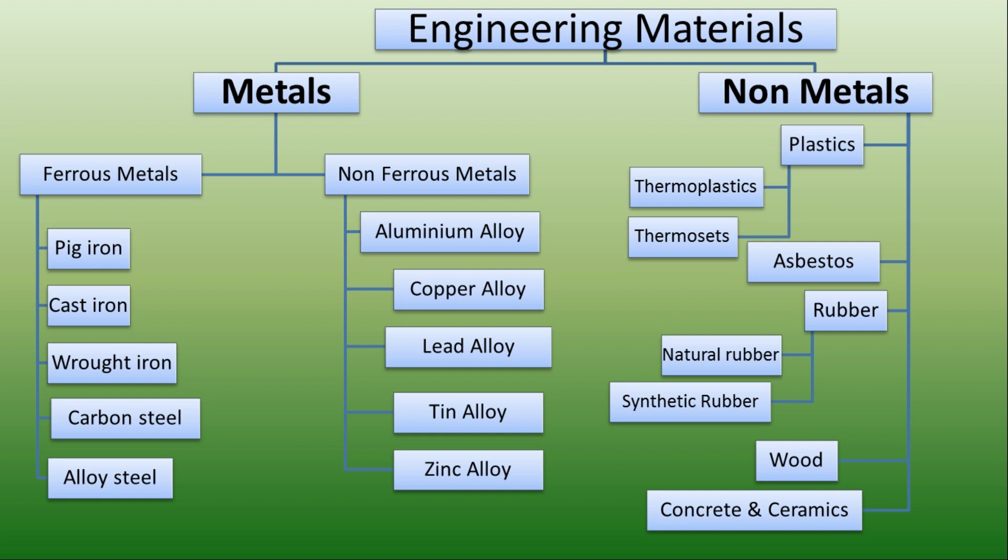Metals that basically contain iron are known as ferrous metals. They are further classified as pig iron, cast iron, wrought iron, carbon steels, and alloy steels. While non-ferrous metals are the metals which do not contain iron as a base metal — they include aluminum and its alloys, similarly copper, lead, tin, zinc, and their alloys.